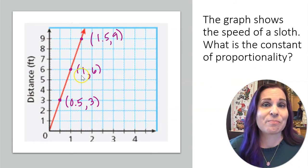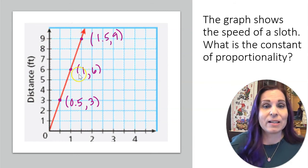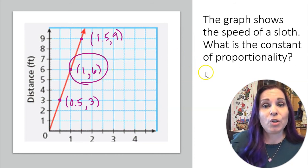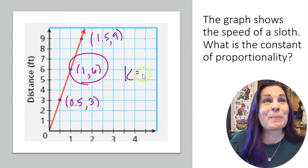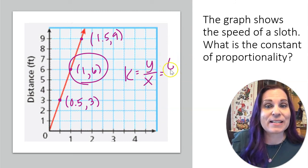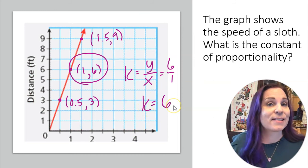So why not avoid decimals to make it simple? I'm going to use this point. All right, so I know that the constant of proportionality is y over x. So that's going to be 6 over 1. So it's 6.